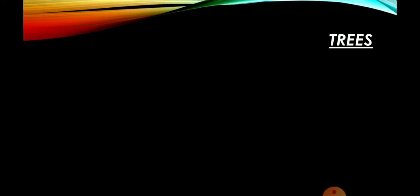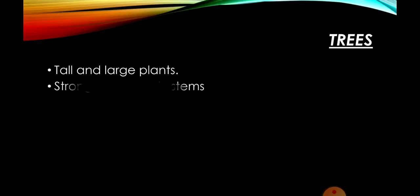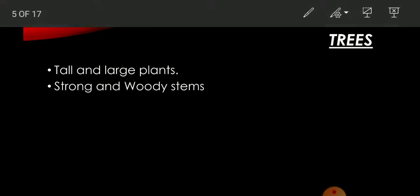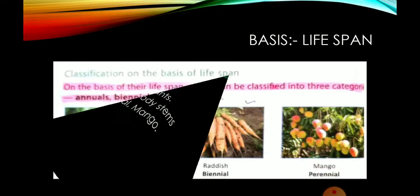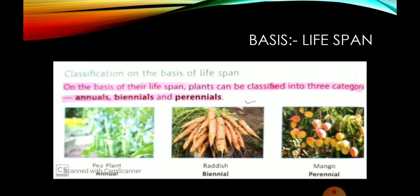Then trees पे आते हैं। Trees होते हैं — आपको पता ही है — tall और बहुत बड़े-बड़े होते हैं। Then strong और woody stems होते हैं, बहुत strong होते हैं, और इनका stem जो होता है wooden होता है। Then neem, peepal and mango — यह इसके examples हैं trees के। Trees आपने देखे ही हुए हैं।